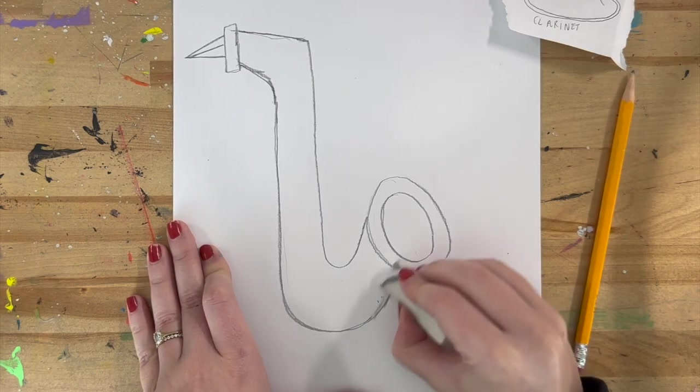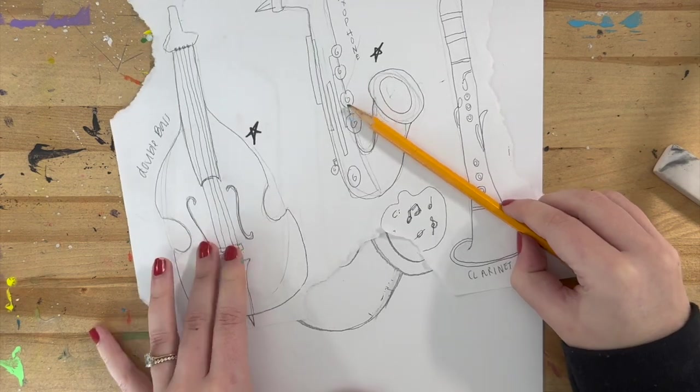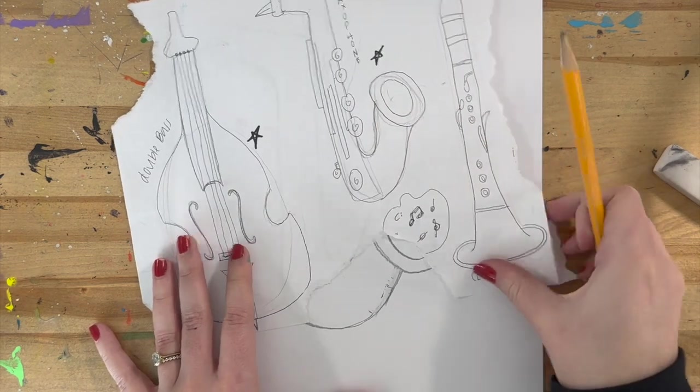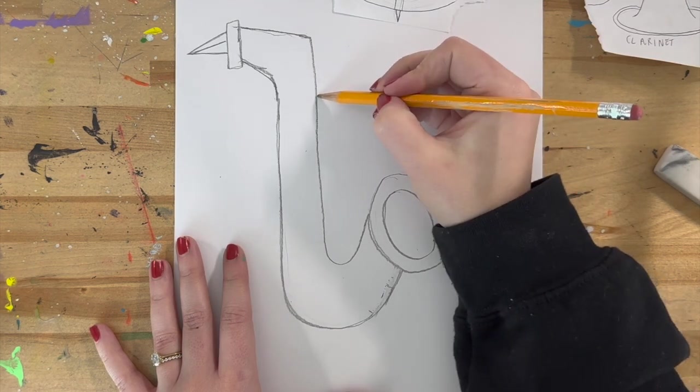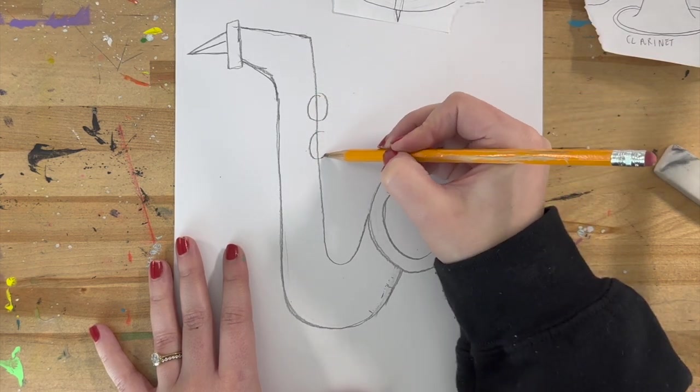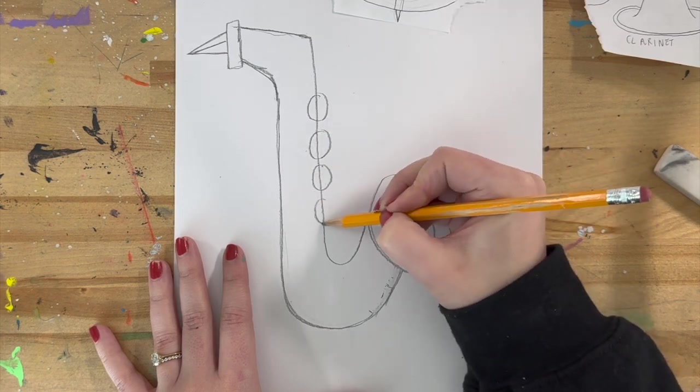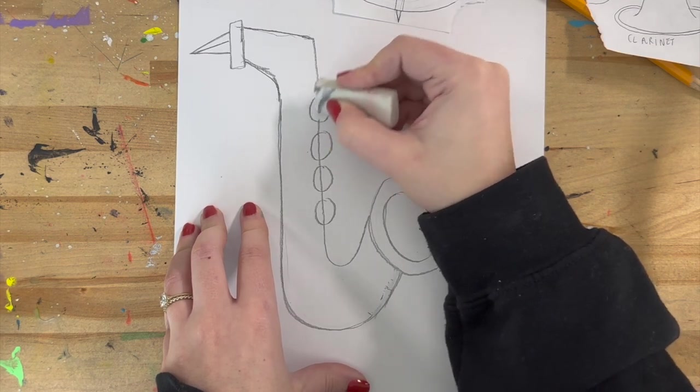We can start to add the details. That means adding the different keys. Saxophones have tons of keys, so let's draw a couple of them. The keys are circle shaped. So along this side of my saxophone, I'm going to draw four pretty large circles. And we can erase the line inside of them.